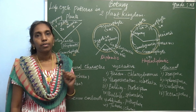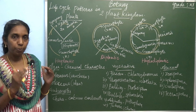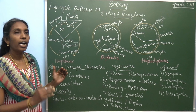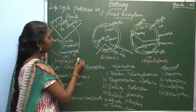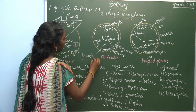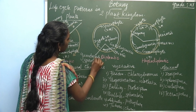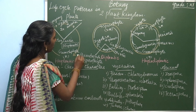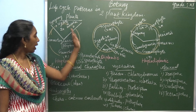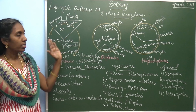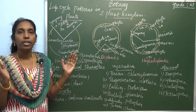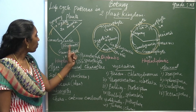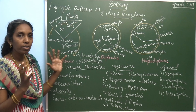In the Haplontic Life Cycle, there are two phases: Gametophyte and Sporophyte. Gametophyte is Haploid (N) and Sporophyte is Diploid (2N). In the Haplontic pattern, the Haploid Gametophytic phase is dominant over the Sporophytic phase, and it is photosynthetic and independent. So the dominant phase is N.